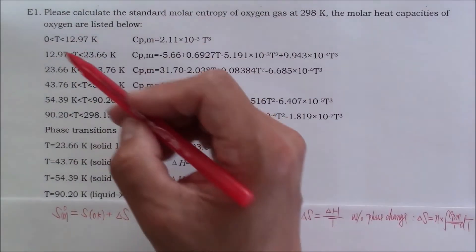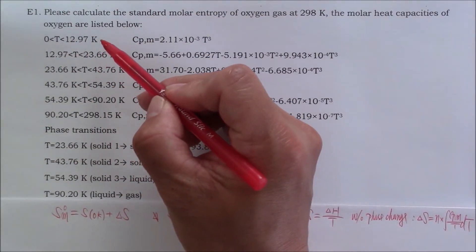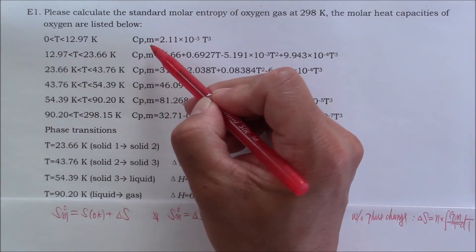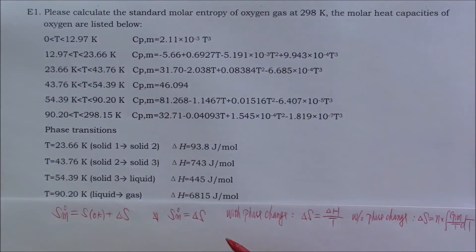As we can see here, at different temperature ranges, the CPM expression is different. What I am going to do is, I am going to show you one of the calculations. Then, you should be able to follow the same method to calculate delta S for the other temperature ranges. Similarly, I will show you one example for the phase transition entropy change calculation. Then, you should be able to finish the rest.